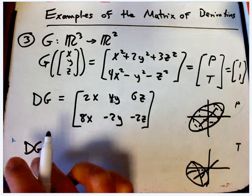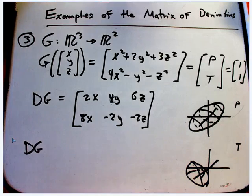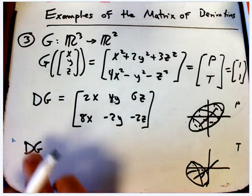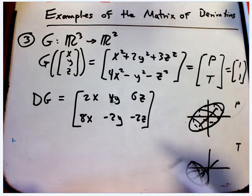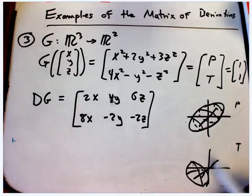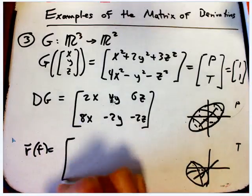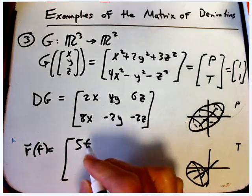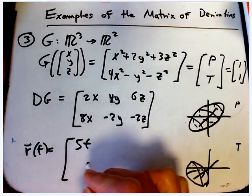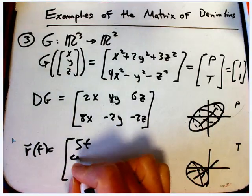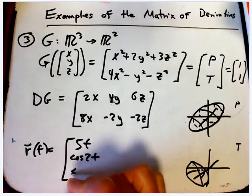Well, let me combine this. Let's suppose we are monitoring the pressure and the temperature of a particle given by R of t, which was doing that helix before, 5t, where was it? 5t, cosine 2t, and sine 2t.